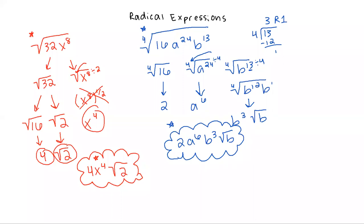The last simplifying example we're going to do — this is a good one to pause and try on your own to see if you're getting the hang of it. We're going to do the square root of 12c to the sixth d cubed. Go ahead and pause it and see if you can simplify that on your own, and then unpause to see if you did it correctly.